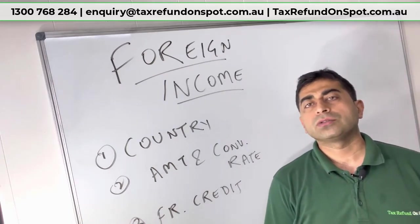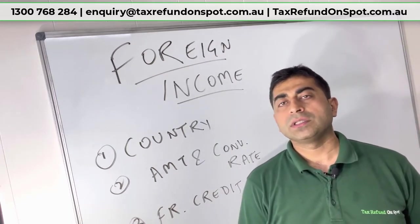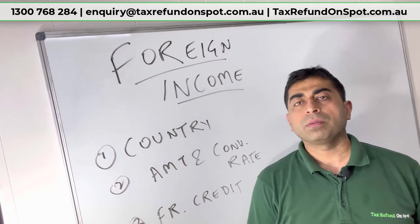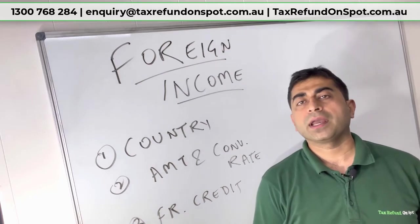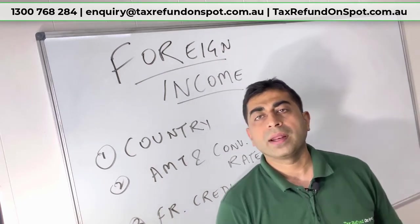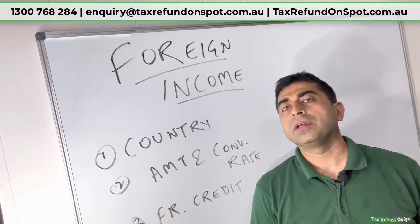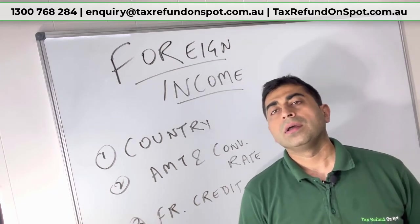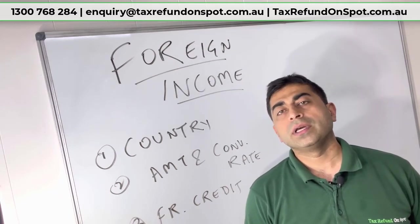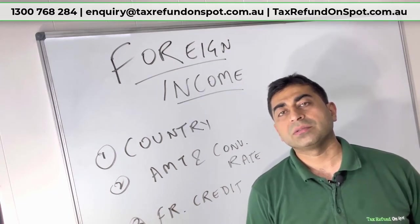Foreign income means income from any source overseas — it can be Europe, Asia, New Zealand, or America. Income from all those sources you must include here, along with the tax paid in those countries.